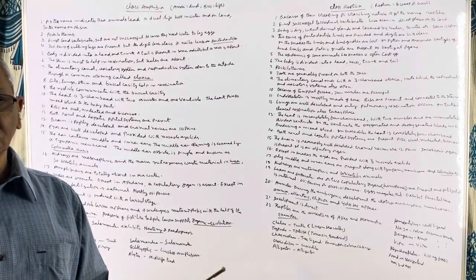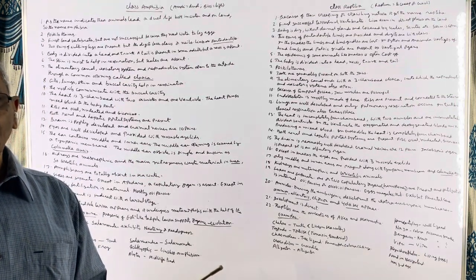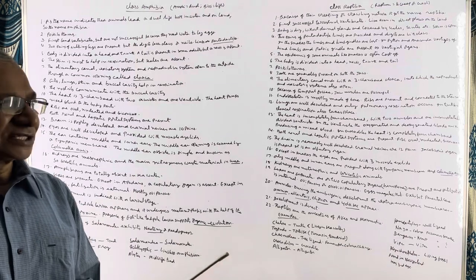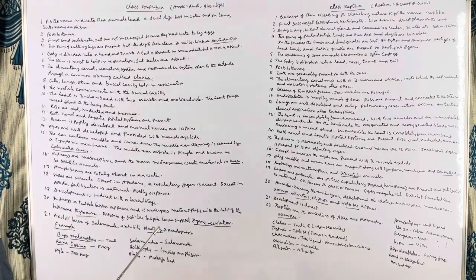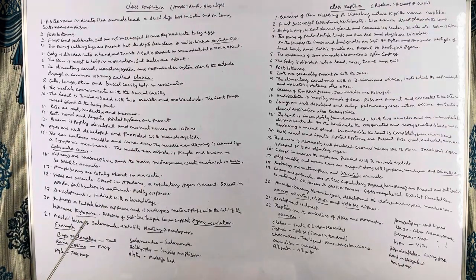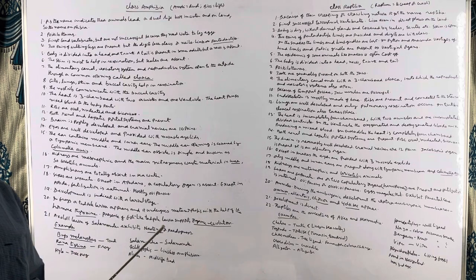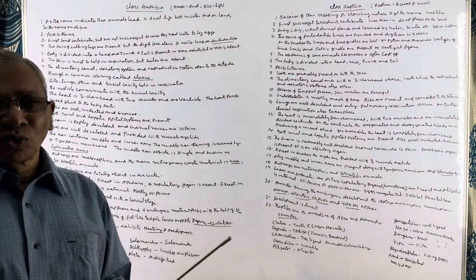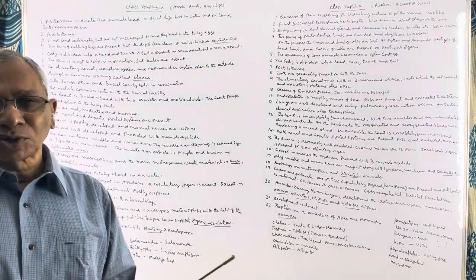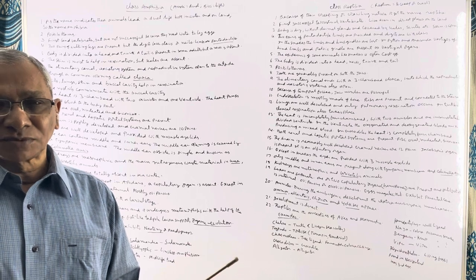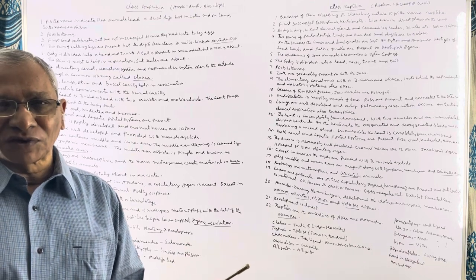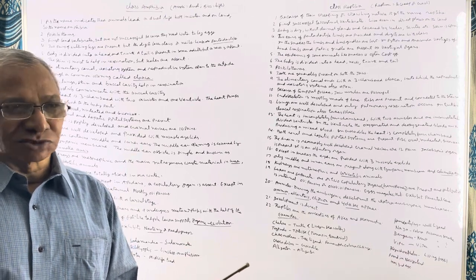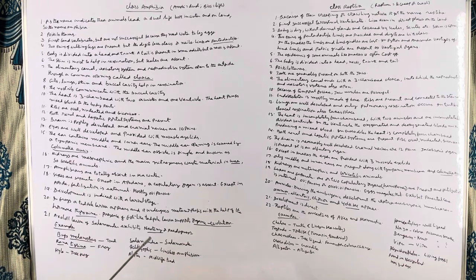A tail is present in some adult amphibians but absent in others. The alimentary canal, the excretory system, and the reproductive system all open into a common chamber known as the cloaca. Cloaca is the common opening for all these systems, and the digestive system ends with the cloaca.